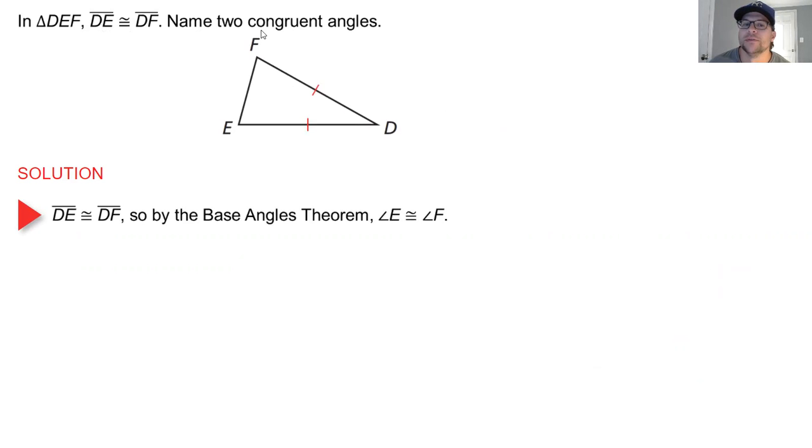So based on the base angle theorem, we have angle E is congruent to angle F. So even though it's not sitting upright like that first couple examples, the base is EF and your base angles are E and F and those two are congruent. D would be considered your vertex angle.